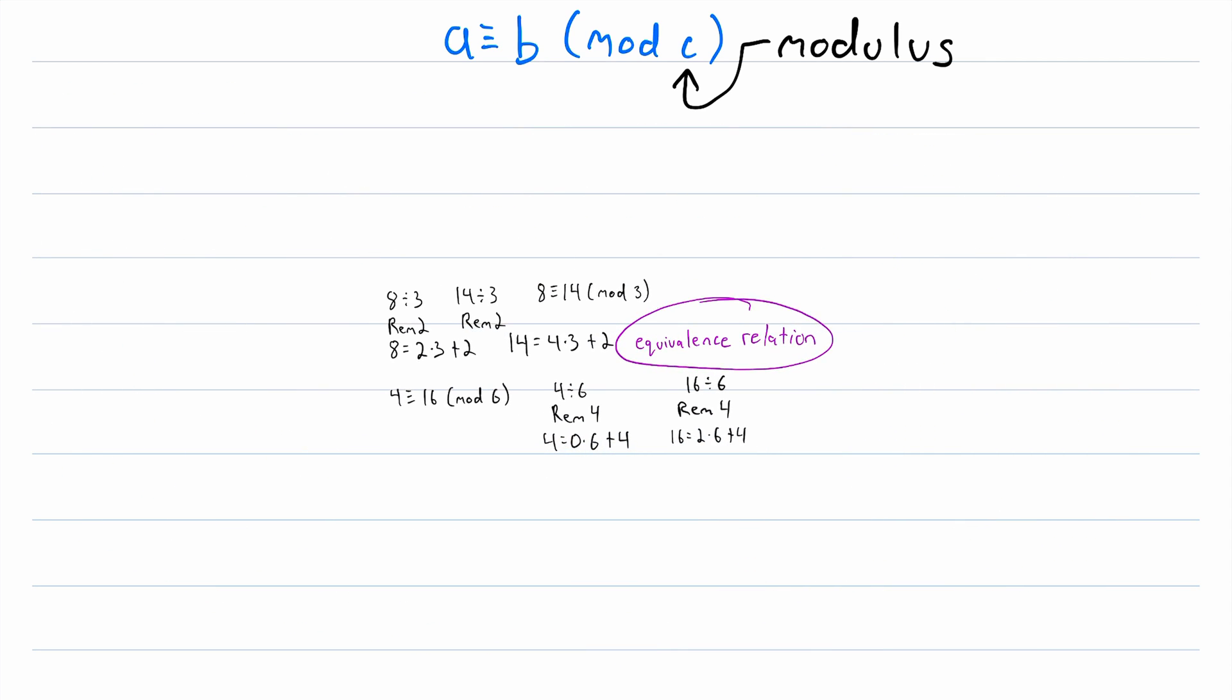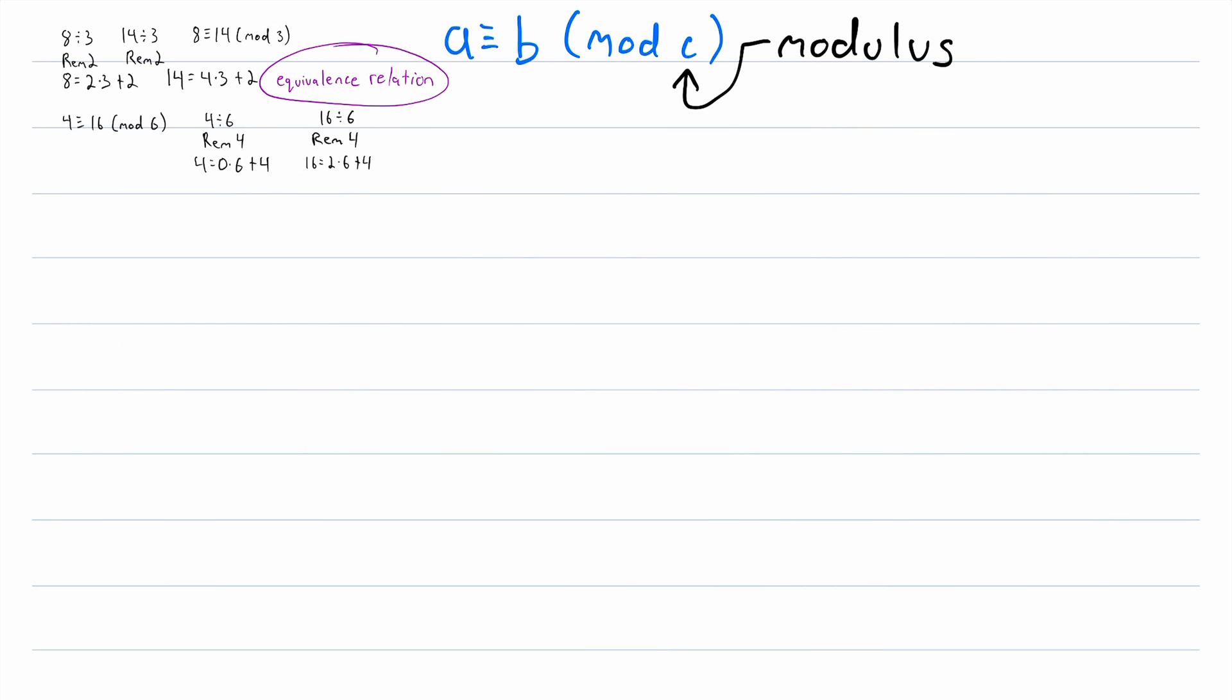And before we go on, I should add that when we're talking about modular congruence, a and b are usually going to be integers. So a and b are elements of the integers, and c, the modulus, is a natural number greater than 1. So c is an element of the natural numbers, and c is greater than 1. So most often, these are the types of numbers we're talking about with modular congruence. We already said that a is congruent to b mod c if and only if a and b have the same remainders when divided by c.